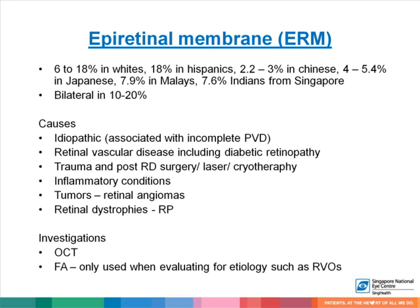Common causes of epiretinal membrane include being idiopathic, retinal vascular disease including diabetic retinopathy, trauma, post-retinal detachment surgery especially after laser or cryotherapy, inflammatory conditions, tumors such as retinal angiomas, and retinal dystrophies such as retinitis pigmentosa. When an ERM is identified, OCT is performed to look at the structure, and if a vascular etiology is suspected, fluorescein angiography may be used.